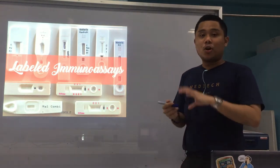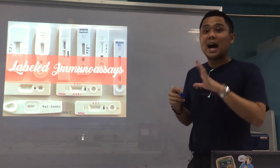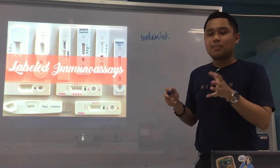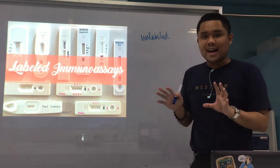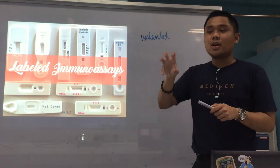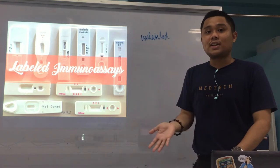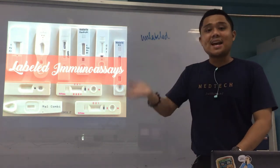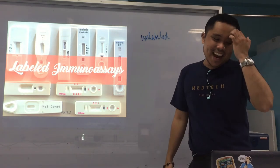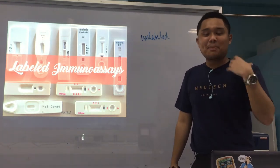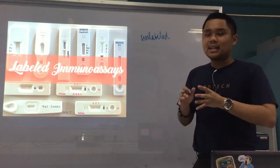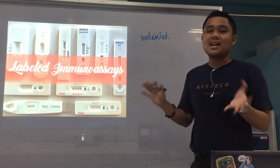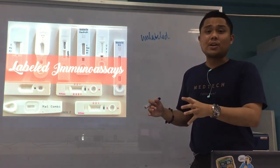As mentioned, if you can recall in our lecture on agglutination and precipitation reactions, these two types of reactions are known as unlabeled immunoassays. These are unlabeled. We use precipitation and agglutination reactions to visualize antigen-antibody reactions. But these two types of reactions are considered unlabeled — meaning you don't need a label. It does not use any enzyme, any fluorophore or fluorescent material, or any chemical reaction to visualize the antigen-antibody reaction.